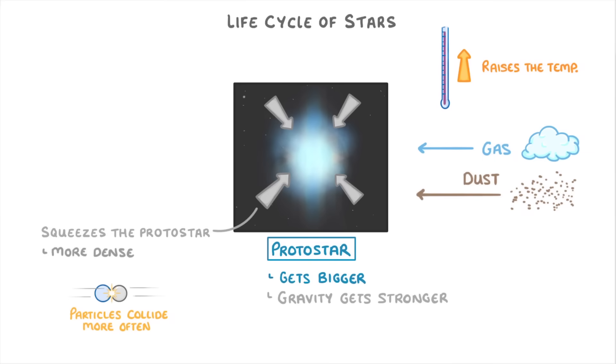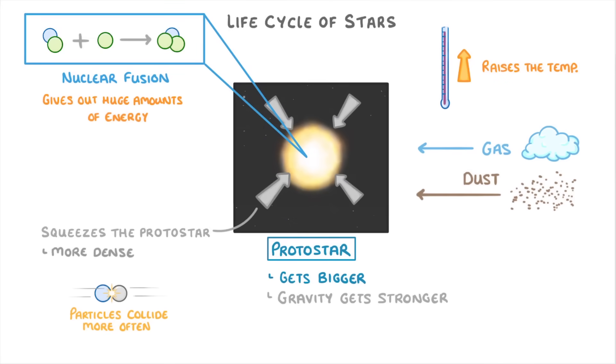Then, when the temperature and pressure get high enough, hydrogen nuclei start to fuse together to form helium nuclei, in a process called nuclear fusion. This gives out huge amounts of energy, which keeps the core of the star hot. And it's at this point that we call it an actual star, or more precisely, a main sequence star.